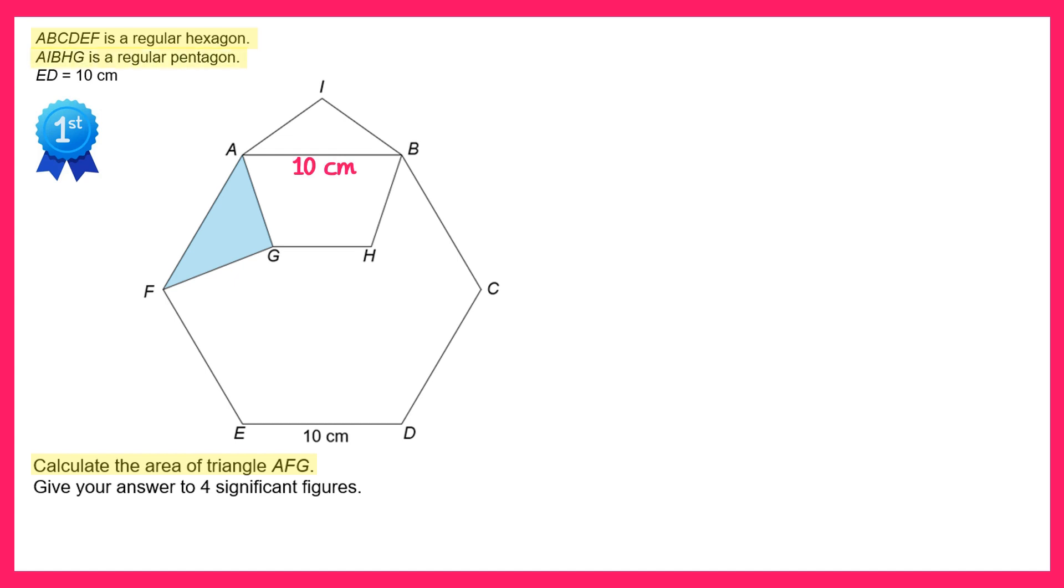We're also told about a regular pentagon and it's this pentagon we're going to focus on in more detail. So this pentagon here. Now let's join up the points A and B. We know that's 10 centimeters from the diagram, and I'm going to drop a vertical line from I straight down to this line here.